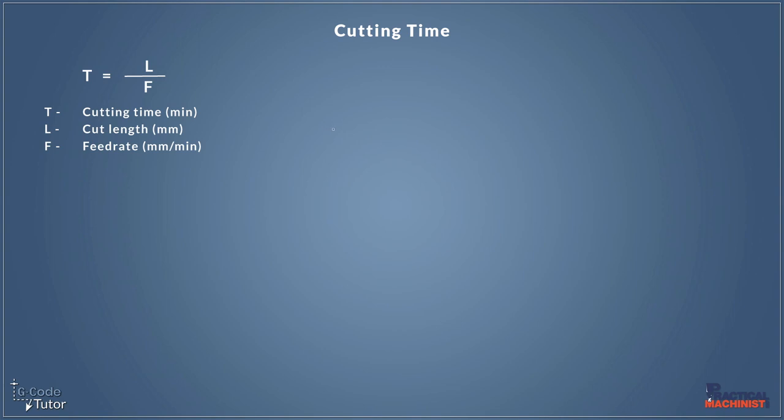In this first example, let's have a look at a metric one. So we're going to be calculating our time represented by the letter T and this is in minutes. So our cut length is our L, the first part of our equation. Let's say we're cutting a 20 millimeter long cut and we're using a feed rate of 200 millimeters per minute. So it's a simple case of doing this division sum here. So 20 divided by 200 would give us an answer of 0.1.